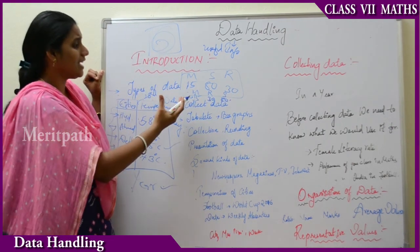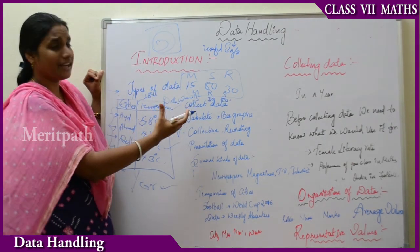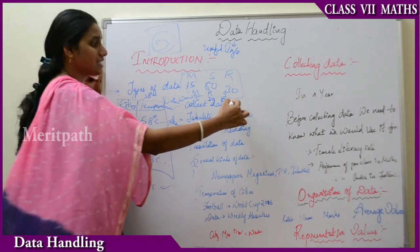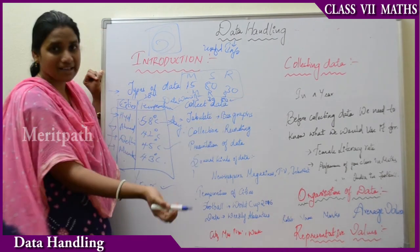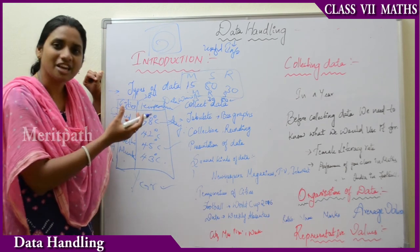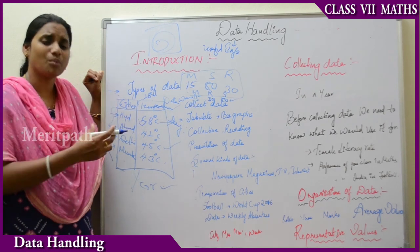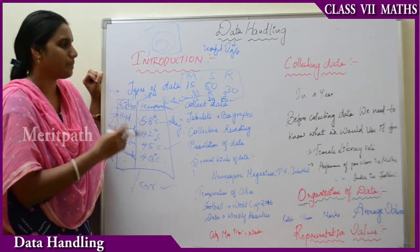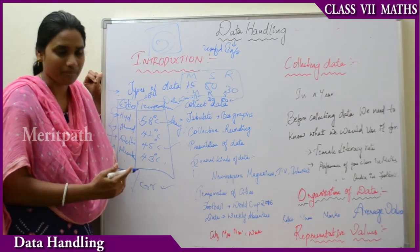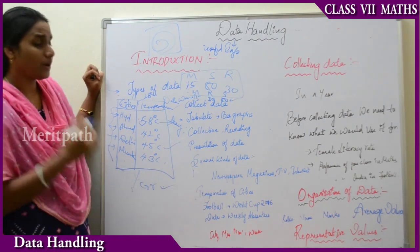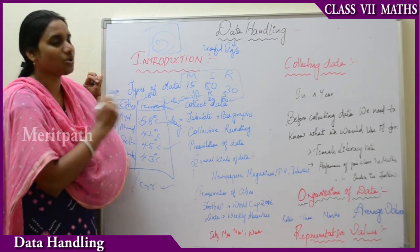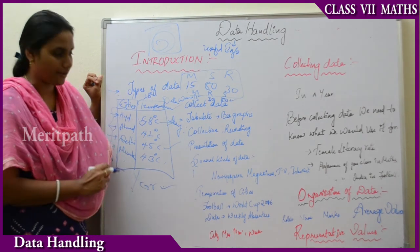Now I can easily reflect and see quickly that Sridhar has the highest marks and Mahita has the least marks. In this way we will be getting more information by analyzing and organizing the data. I hope you understood the introduction — why to collect the data and why to organize the data.